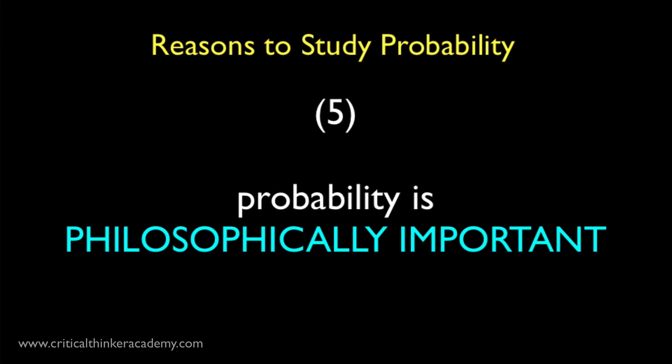Just to give an example, the so-called fine-tuning argument for the existence of God is based on the premise that we live in a universe that is probabilistically very unlikely, if it wasn't the product of some kind of intelligent design.